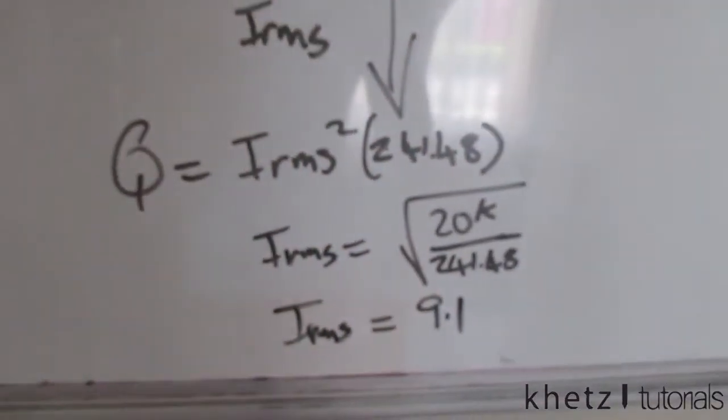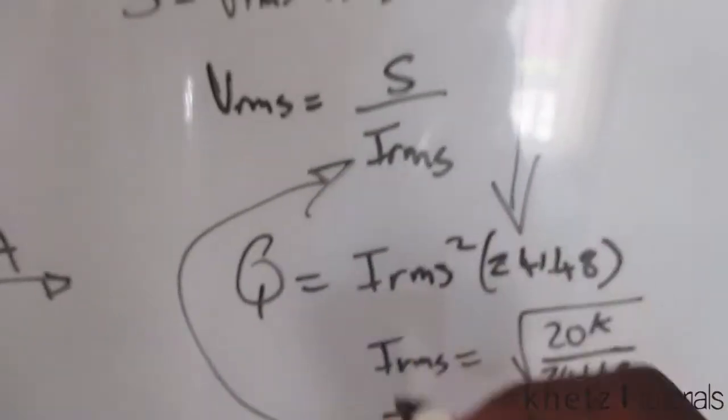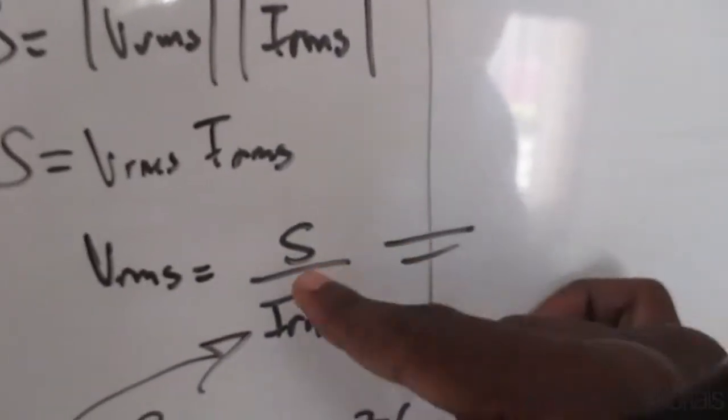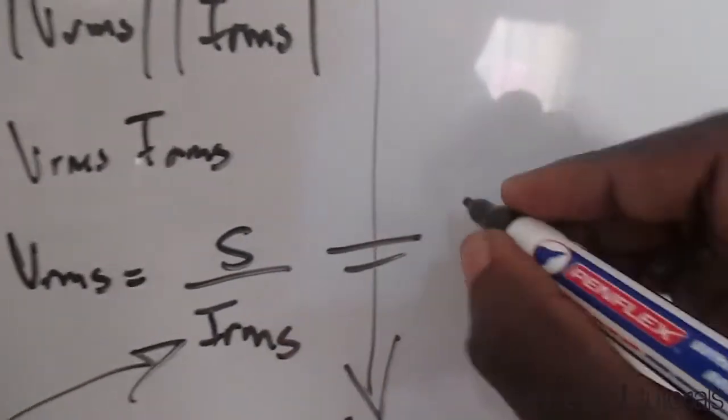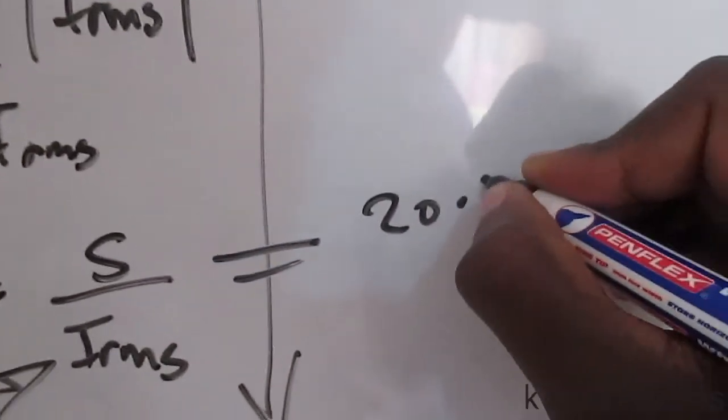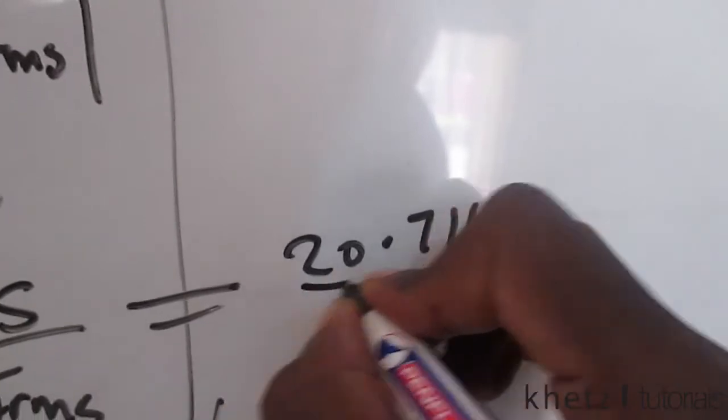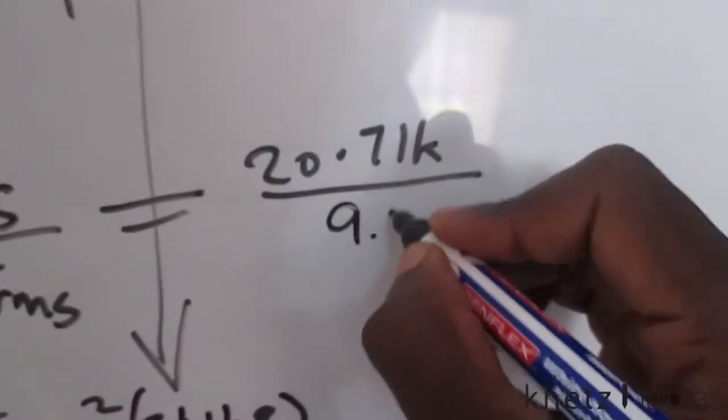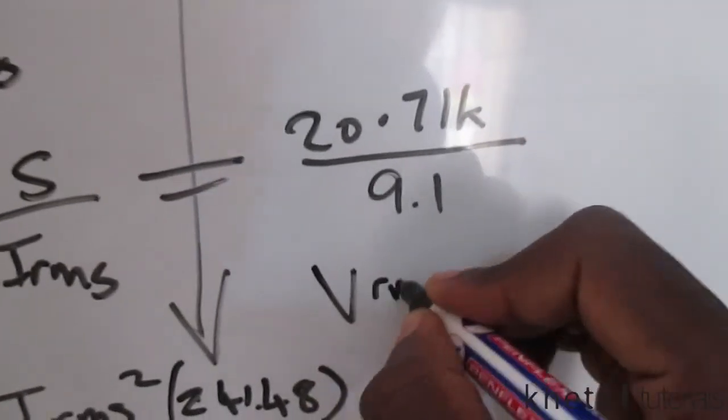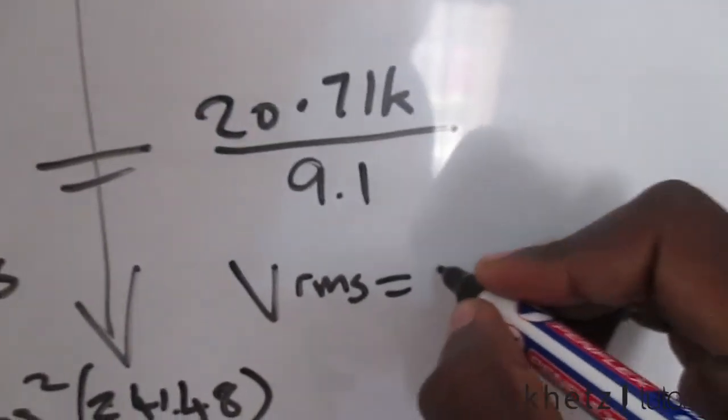You're going to come back to this formula and say the value of your apparent power, we just found that in the previous question, is 20.71k. I'm going to divide that by the newly found value of Irms of 9.1, and therefore our Vrms is going to be 2.276kV.